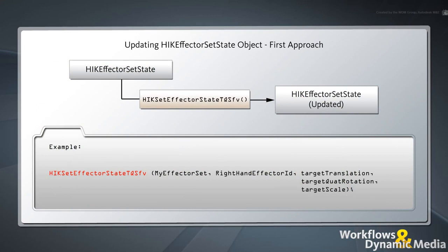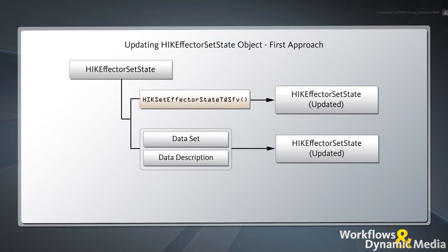There are two different approaches to update the HIKEffectorSetState object. To set one or more effectors directly, call the HIKSetEffectorStateTQSFV function with the following arguments: a pointer to the HIKEffectorSetState object; the unique ID of the effector to set, which is different from the node ID of the corresponding joint; and three separate arrays of four floating-point numbers representing the new translation, quaternion rotation, and scale values of the effector in normalized space. Note that you could also use a dataset with description to update multiple effectors at once.